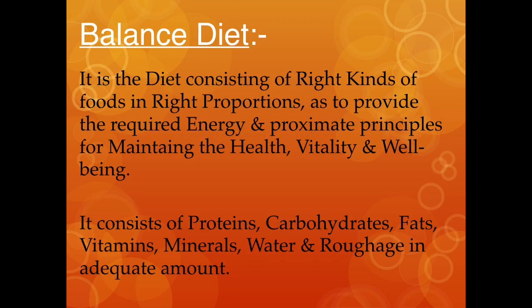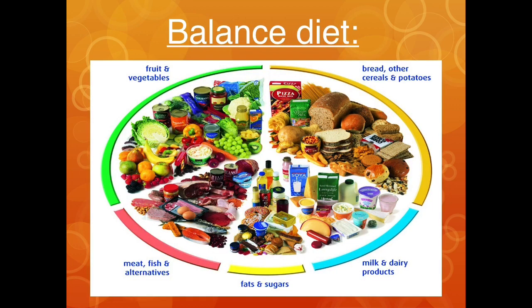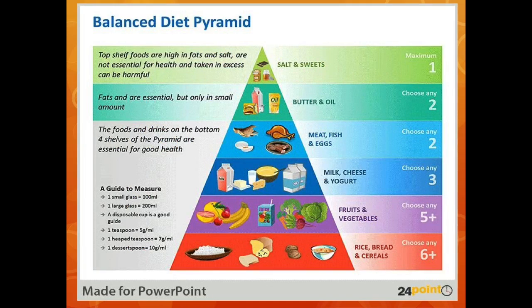Balanced diet: it consists of proteins, carbohydrates, fats, vitamins, minerals, water, and roughage in adequate amounts. It is the diet that consists of the right kind of foods in right proportions so as to provide the required energy for maintaining health, vitality, and well-being.